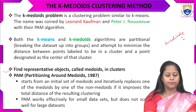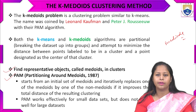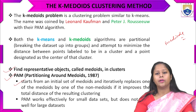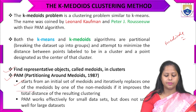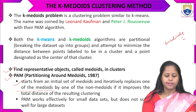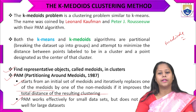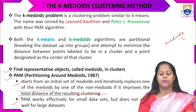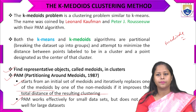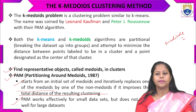Partitioning Around Medoids was invented in 1987. In the algorithm, we start with an initial set of medoids and iteratively replace one medoid with a non-medoid if it improves the total distance of the resulting cluster. The algorithm works effectively for small data sets but does not scale well for large data sets — that is one limitation of the K-medoid algorithm.